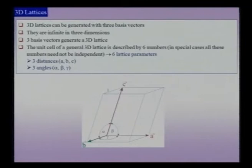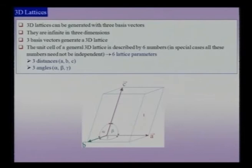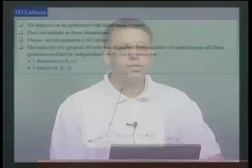We have six lattice parameters to describe a general lattice in three dimensions: three distances A, B, and C, and three angles alpha, beta, and gamma. As in two dimensions, there will be special cases where some distances are equal or some angles have special values. For instance, a three-dimensional cube is a space-filling solid. Let us launch a short video to visualize the step-by-step construction of a cubic lattice.